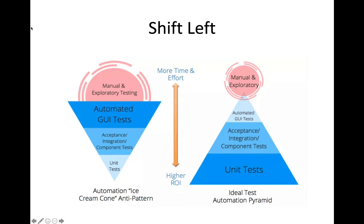On the right-hand side of this diagram, we see what we call the ideal test automation pyramid. In the ideal test automation pyramid, the company is investing most of its testing effort and energy at the unit testing and acceptance/integration testing stage. These tend to be API-level tests and unit tests. Unit tests run remarkably quickly — you can run thousands of unit tests in an application in seconds. And API tests also tend to work very quickly.